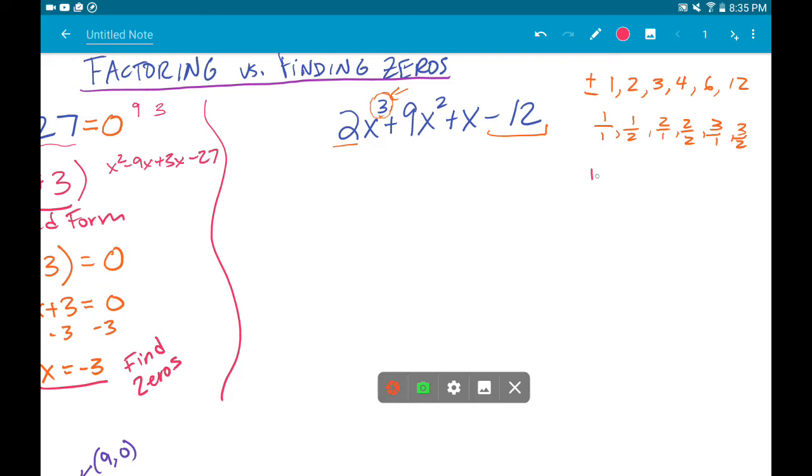We're going to test some factors using synthetic division. So again, I'm using the coefficients 2, 9, 1, and negative 12 here. And with synthetic division, 1 times 2 is 2. Add them together. 11 plus 1 is 12. 1 times 12, we got really lucky. If we get a remainder of 0 here, it tells us that this is in fact a zero. So if I kind of keep this tally down here, one of my zeros is in fact the number 1.